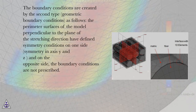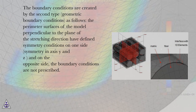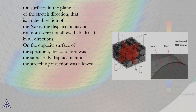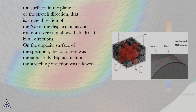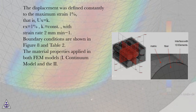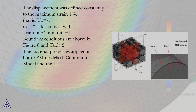The boundary conditions are created by the second type — geometric boundary conditions. The perimeter surfaces of the model perpendicular to the plane of the stretching direction have defined symmetry conditions on one side (symmetry in axes y and z), while on the opposite side boundary conditions are not prescribed. On surfaces in the plane of the stretch direction (z-axis), displacements and rotations were not allowed (ui equals re equals zero in all directions). On the opposite surface, only displacement in the stretching direction was allowed, defined constantly to maximum strain of 1%, that is, ux equals k, epsilon x equals 1%, k equals const, with strain rate 2 millimeters per minute. Boundary conditions are shown in figure 8 and table 2.